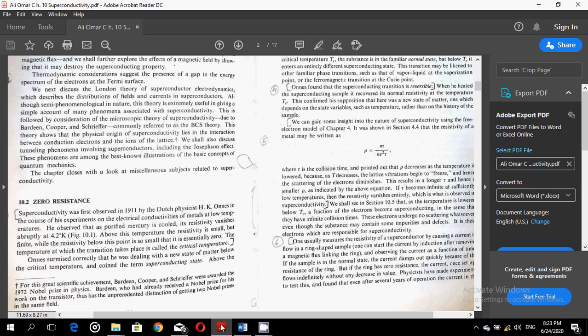He observed that as purified mercury is cooled, its resistivity vanishes abruptly at 4.2 degrees Kelvin. And you can see this in figure 10.1 in the next page. Above this temperature, the resistivity is small but finite, while the resistivity below this point is so small that it is essentially zero.